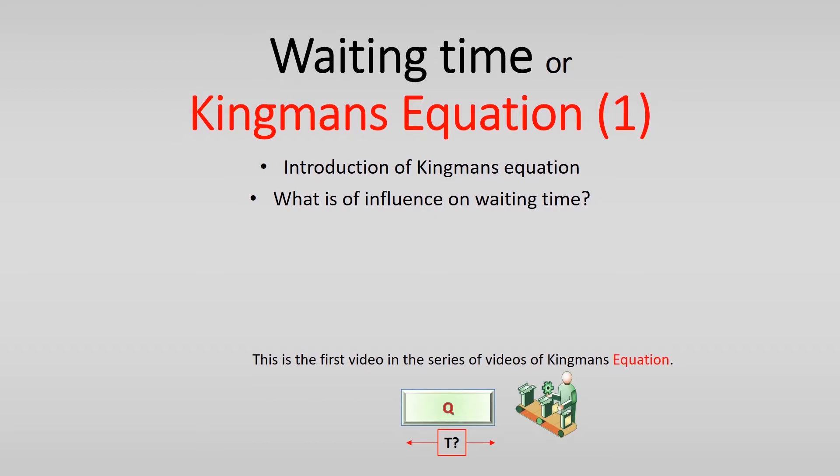This video provides a basic insight in the way the mean waiting time can be calculated before a process. Machines usually have queues before the machine, and John Kingman describes the way a queue forms mathematically in 1961. He did this for a single server, so for a queue waiting for one process or machine.